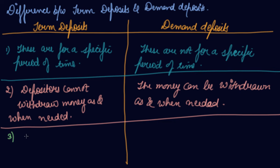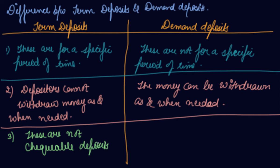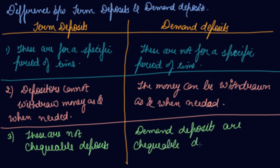The next point: term deposits are non-checkable deposits, meaning you cannot issue a check against your fixed deposit amount. But demand deposits are checkable deposits. So this is the difference between term deposits and demand deposits.